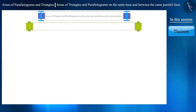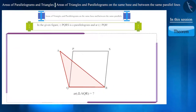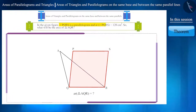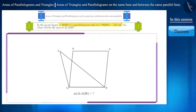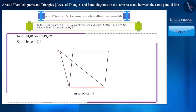Look at the figure given on the screen and tell what would be the area of triangle AQR. It is given that the quadrilateral PQRS is a parallelogram and its area is 120 cm². Triangle AQR and parallelogram PQRS lie on the same base QR.